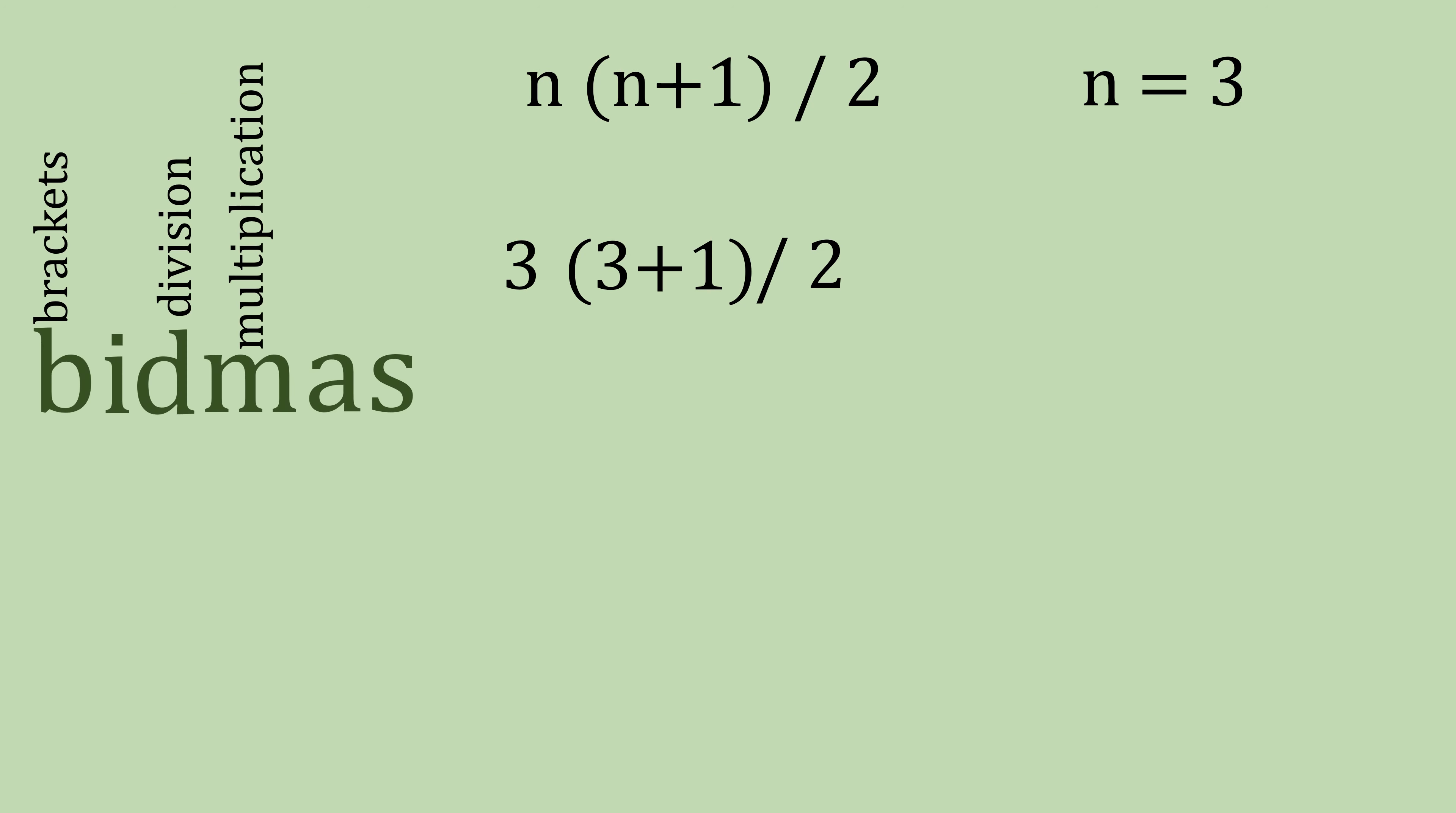So an example, let's walk you through nice and slowly. For this one, we're going to have n equals three. Now you can write it all out if that makes it easier for you. But let's start with the brackets. Three plus one is four. Now, according to BIDMAS, division should be next. But when you only have these two operations left, they become level,